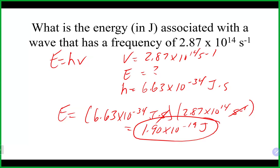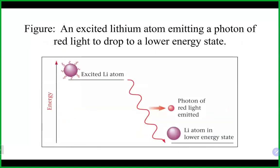Using these formulas — E = hν and E = hc/λ — you can calculate energy, frequency, or wavelength if you know any one of them. Most things like to be in the lowest possible state of energy, so when electrons get excited through an endothermic process (like a flame test), they go to a higher energy level but want to relax back down, releasing energy exothermically.